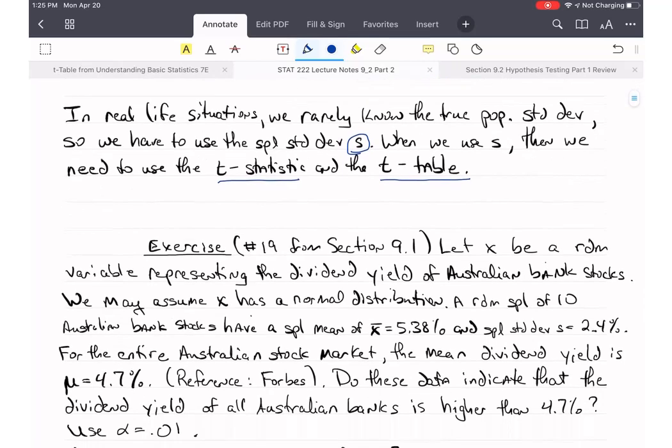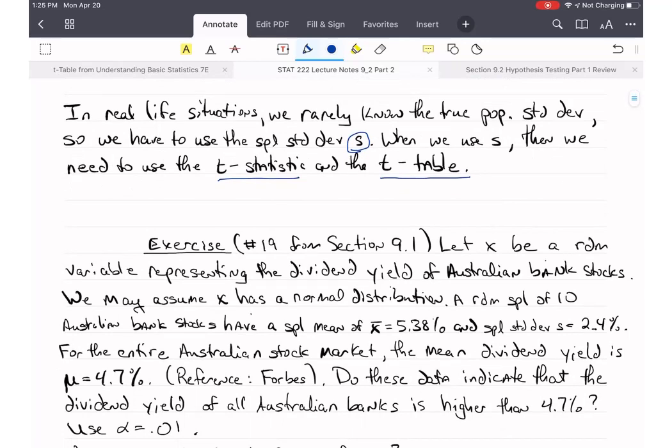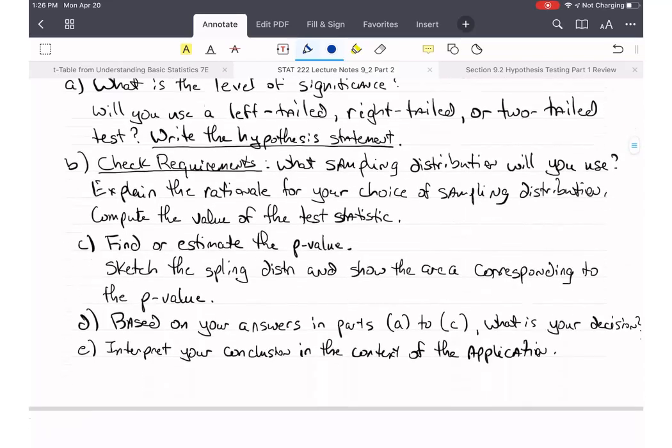Let X be a random variable representing the dividend yield of Australian bank stocks. We may assume X has a normal distribution. A random sample of 10 Australian bank stocks have a sample mean X bar equals 5.38%, and now I'm saying a sample standard deviation S is equal to 2.4%. For the entire Australian stock market, the mean dividend yield is about 4.7%. So do these data indicate that the dividend yield of all Australian banks is higher than 4.7%? Use alpha equals 0.01.